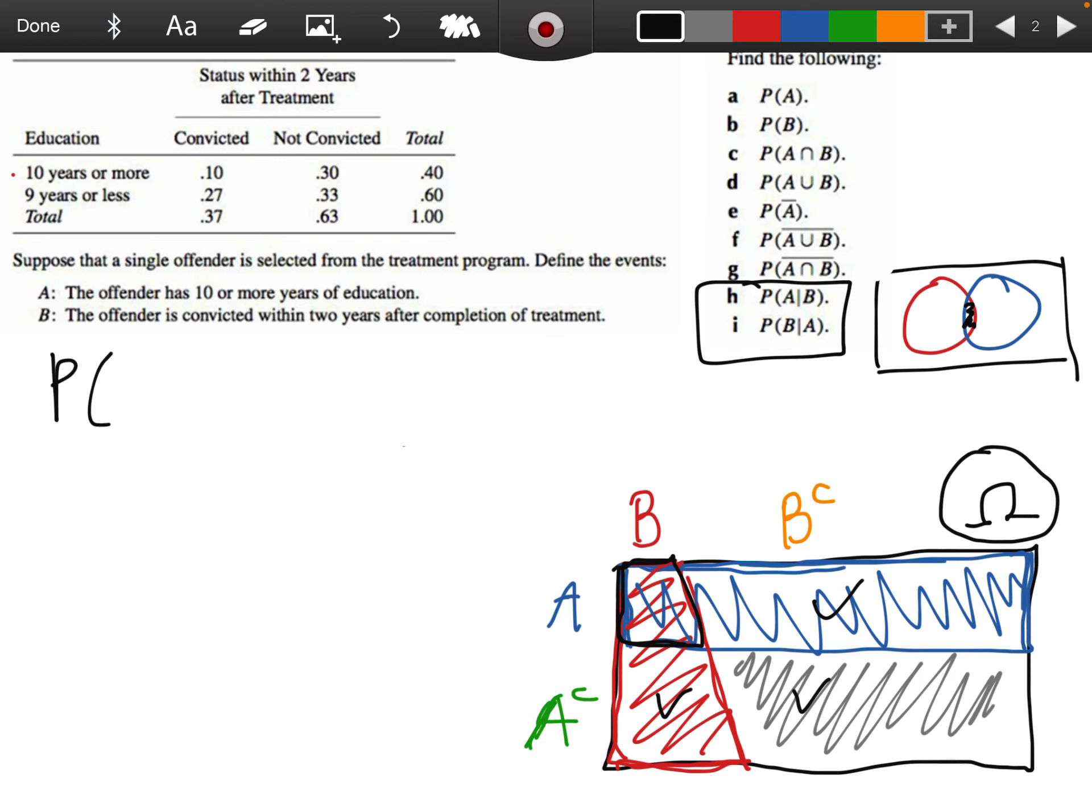The conditional probability of A given B, and then the inverse probability of B given A. All right, so first, probability of A given B. Let's think about what that would sound like in words, since that's often how you're going to encounter it.